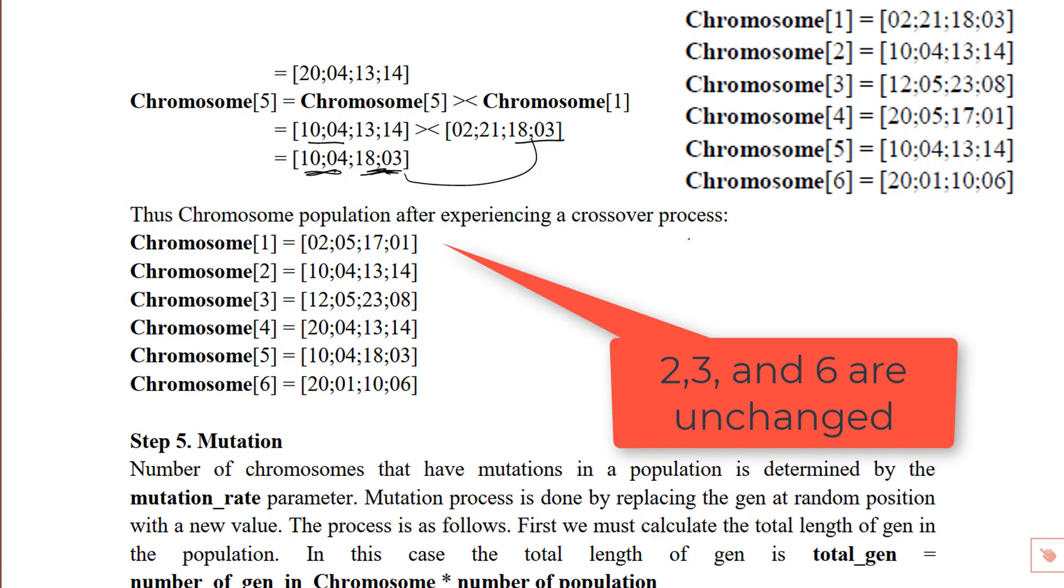Okay, 1, 4, 5 chromosomes are unchanged while 2, 3 and 6 are the new offspring.